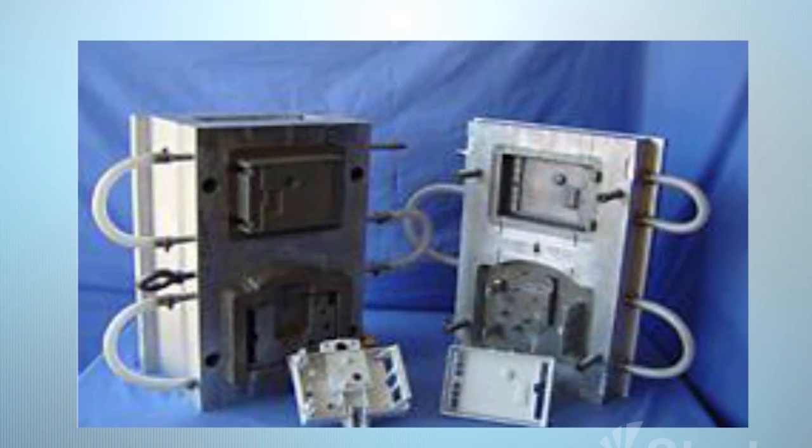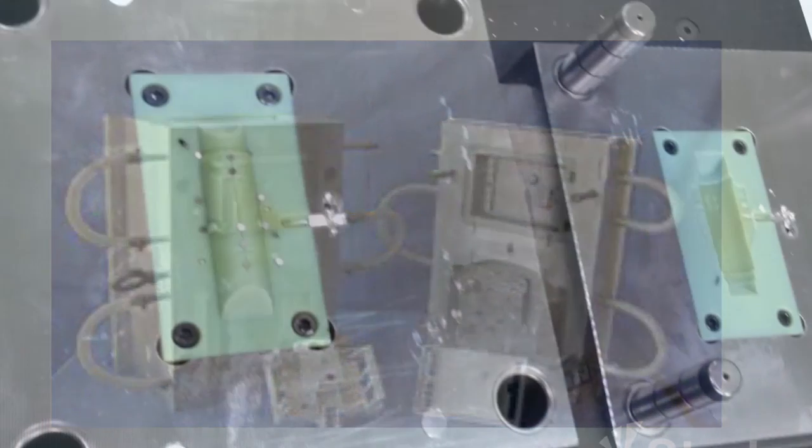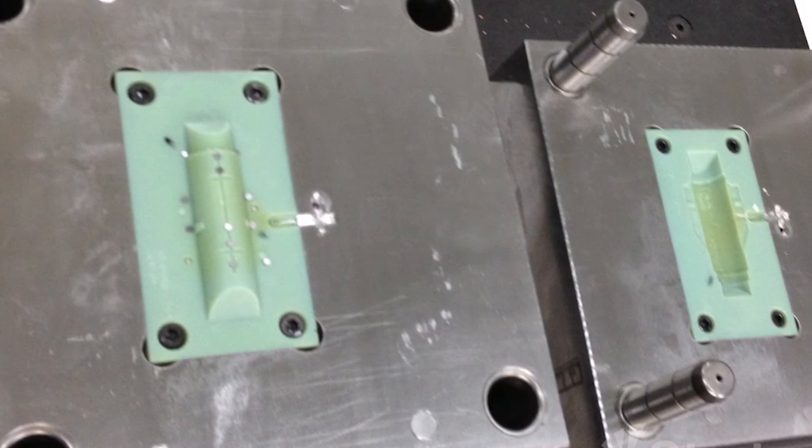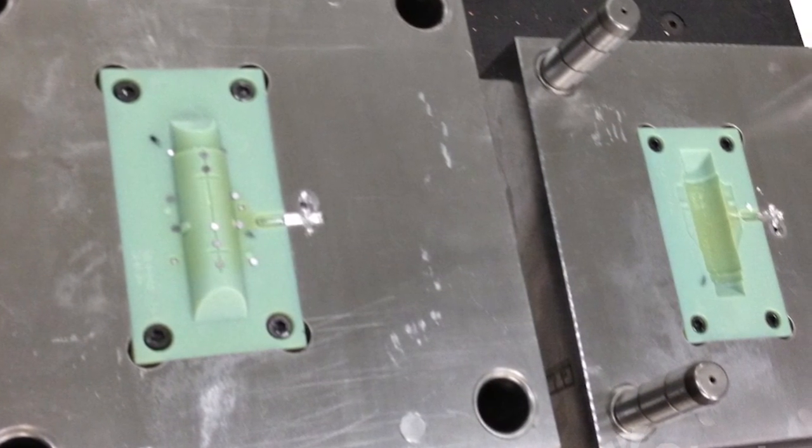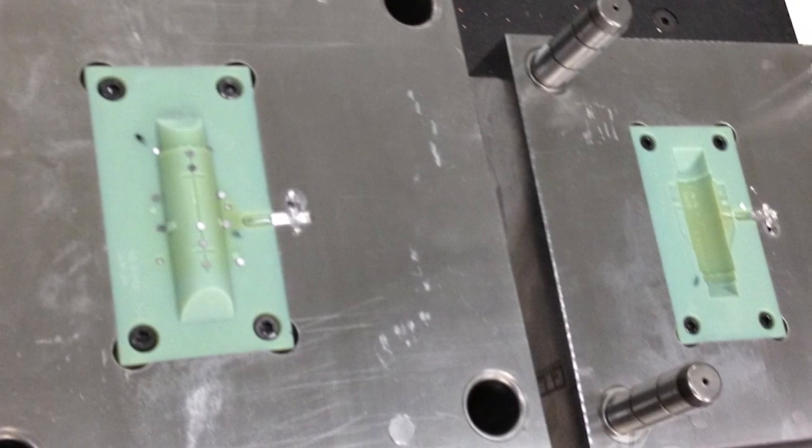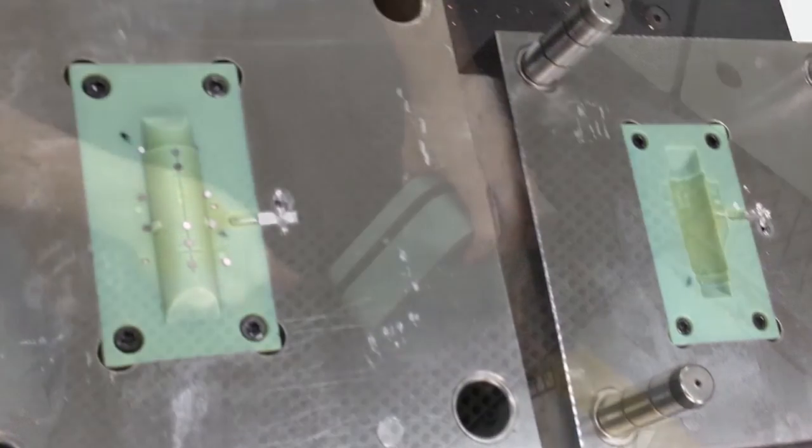plastic is heated and injected into a tool which has a core and cavity side. Although not made of aluminum or steel, the common metals for injection molds, the process is the same when using 3D printed plastic molds.